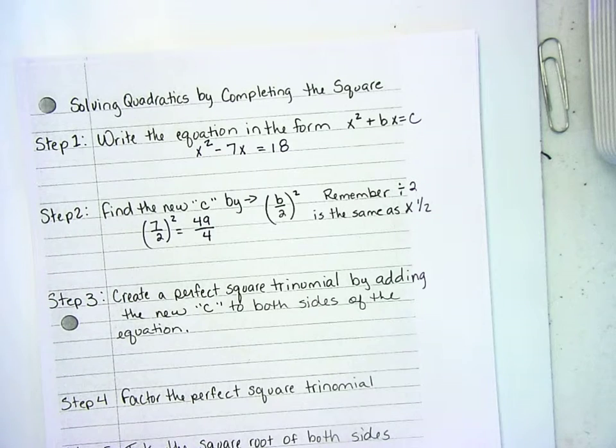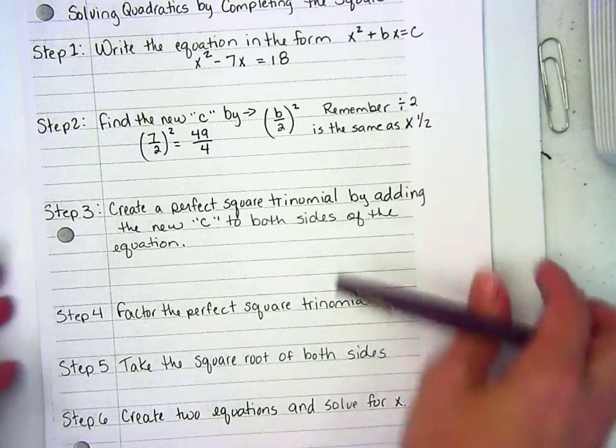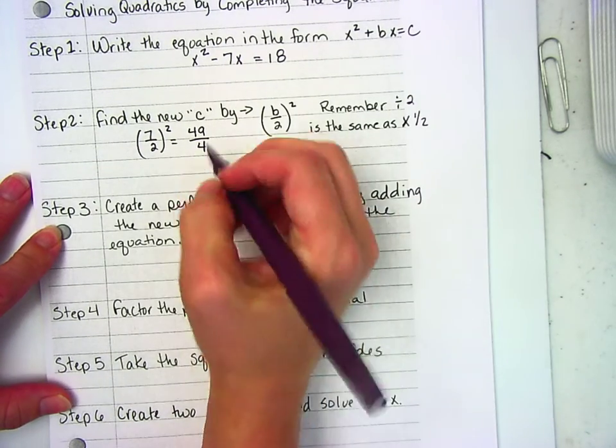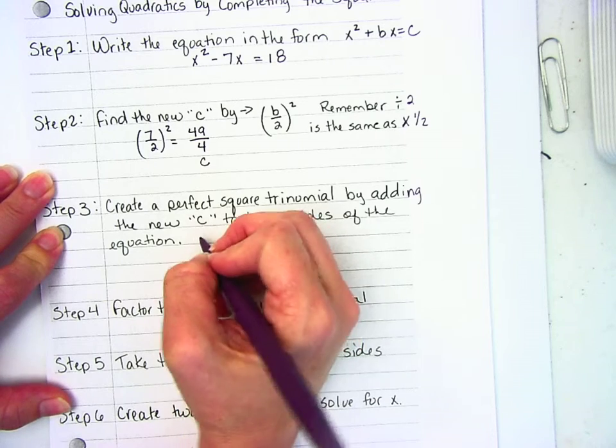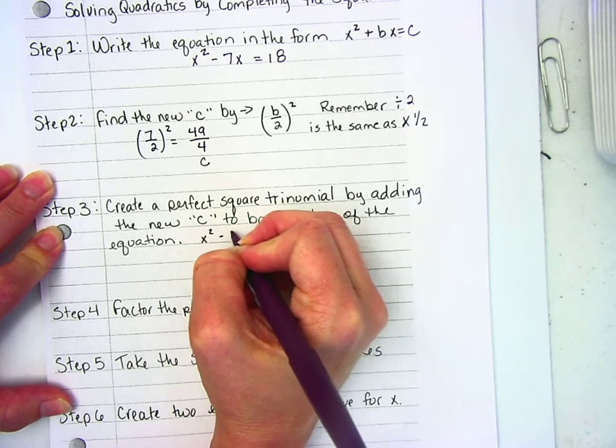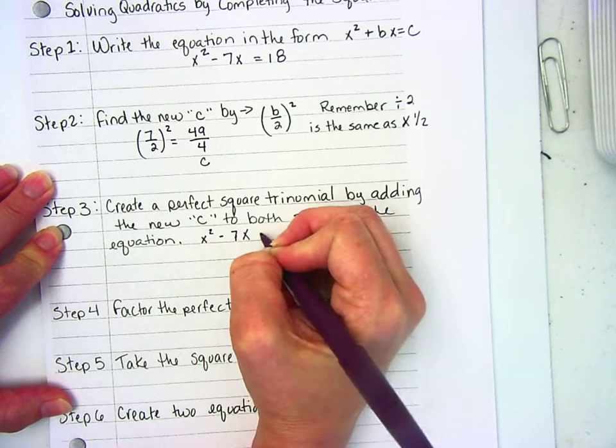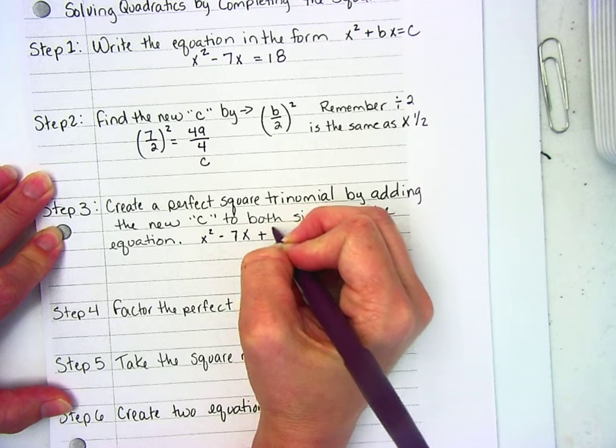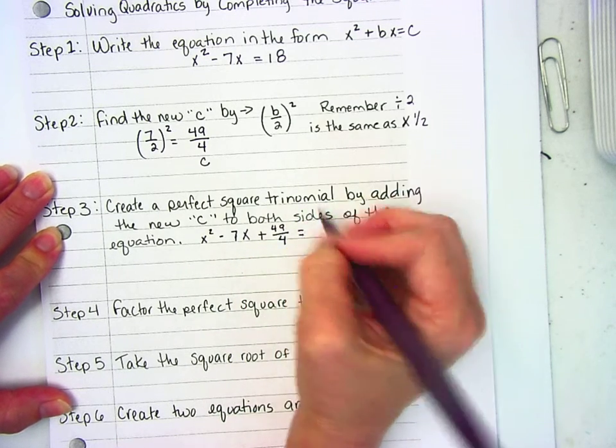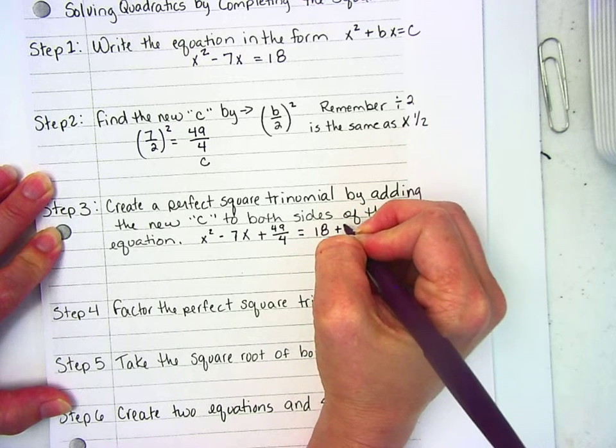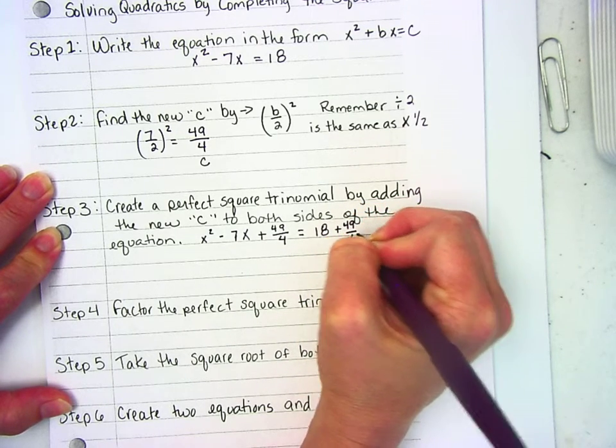That's my new C. Step 3, create a perfect square trinomial. So now I have my new equation: x² - 7x + 49/4 = 18 + 49/4.